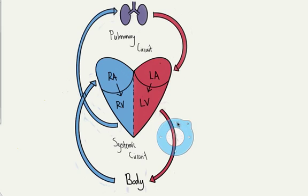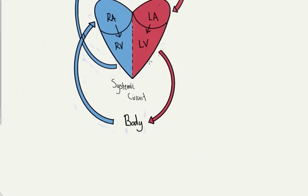What we're going to focus on right now is the systemic circuit. I mentioned earlier that the first artery that gets hit here is the aorta, and then the aorta eventually branches out.